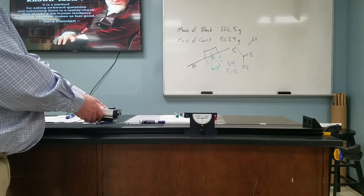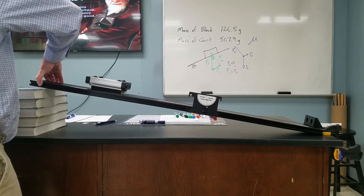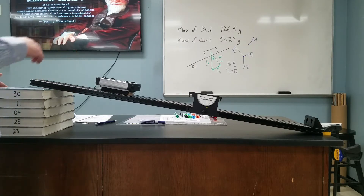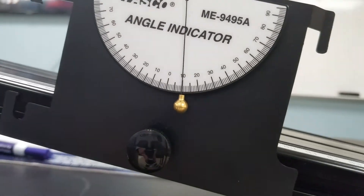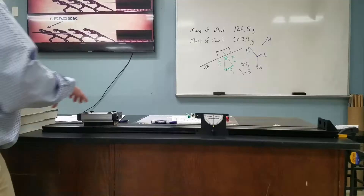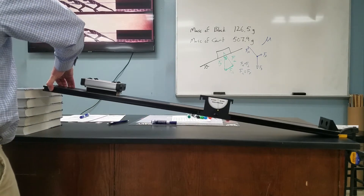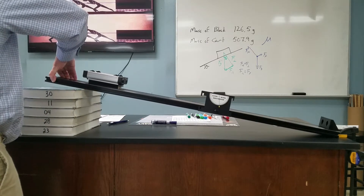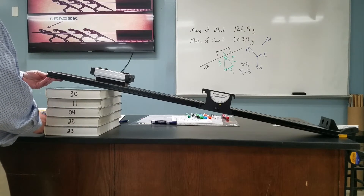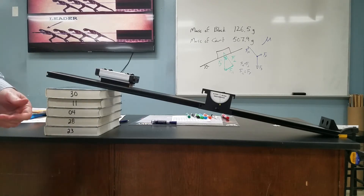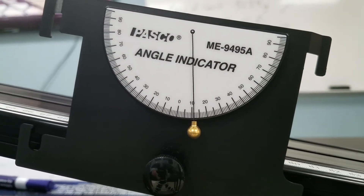Trial two, wood side down — there it breaks loose and the angle is right there. Trial three, wood side down — there it's moving, so the angle for wood side down static friction third trial.